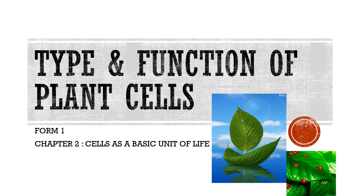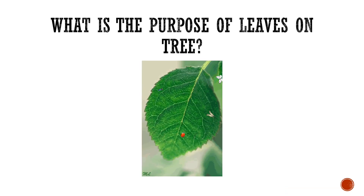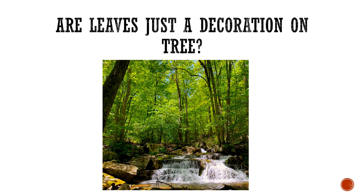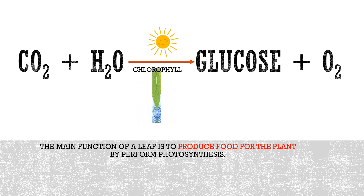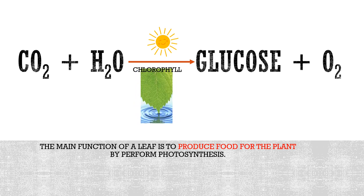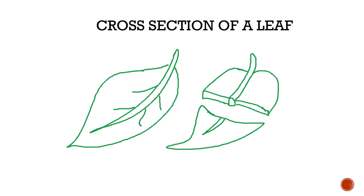Hi guys, today we're going to learn the types and functions of plant cells. What is the purpose of a leaf? Are leaves just decoration on a tree? The main function of a leaf is to produce food for the plant by photosynthesis. This is a cross-section of a leaf.